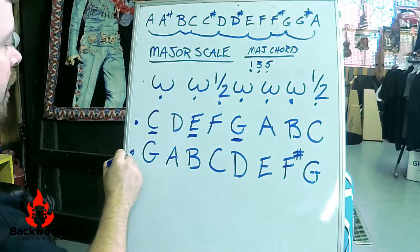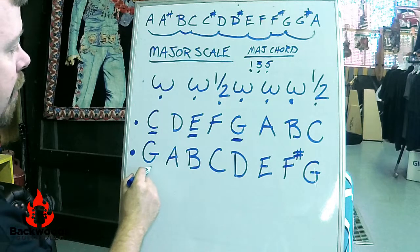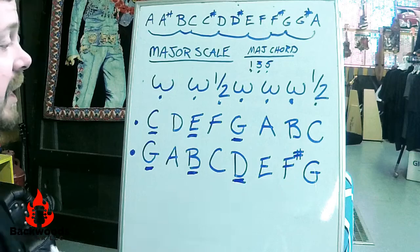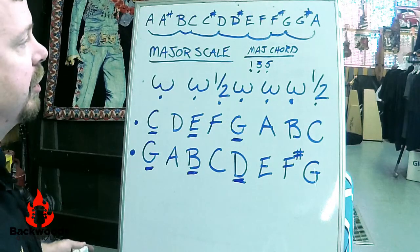Now what are the notes in a G major chord? One is G, three, B, five, D. Pretty easy. Let's do a different one. How about a minor chord?